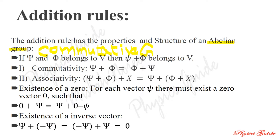In quantum mechanics, commutativity means psi plus phi equals phi plus psi. We define a group: if psi and phi both belong to vector space V, then phi plus psi also belongs to V. This is the group property. The sum of two vectors belonging to a linear vector space V also belongs to that space V.